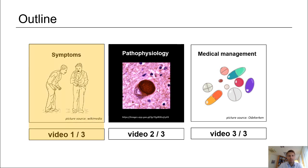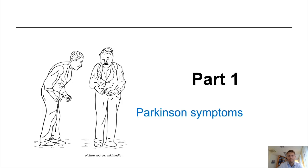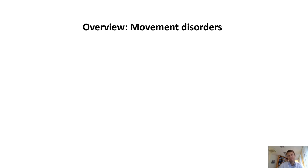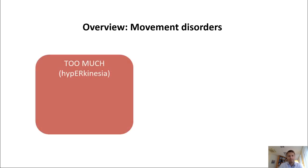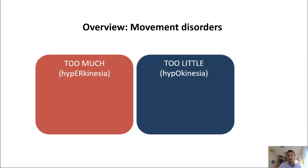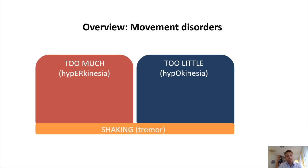What kind of symptoms can you see in movement disorders and Parkinson's disease specifically? Starting with the symptoms, how do we divide those in movement disorders? Basically there are two or three categories in which you can divide abnormal movement. You can have too much movement — hyperkinesia — too little movement — hypokinesia — and there's a third category of tremor, or shaking, which can occur in both hypokinetic and hyperkinetic syndromes.